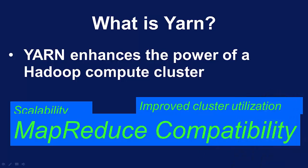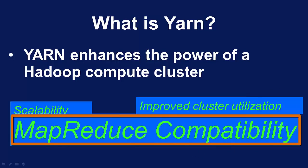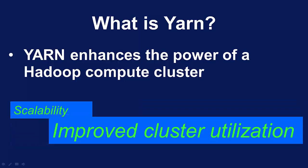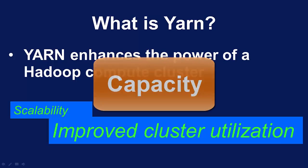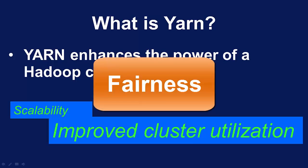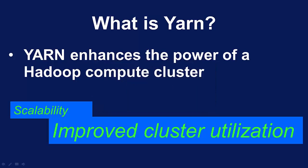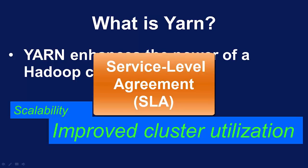Talking about compatibility — YARN is completely compatible with MapReduce. Existing MapReduce applications and users can run on top of YARN without disrupting any of their existing processes. It also has improved cost of utilization. The resource manager is a pure scheduler that optimizes cost of utilization according to criteria such as capacity, guarantees, fairness, and different SLAs — service level agreements.